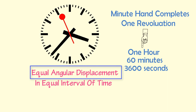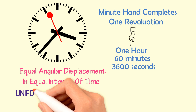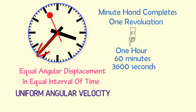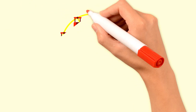In physics, when a body covers equal angular displacement in equal intervals of time, we say the body is rotating with uniform angular velocity. In practical life, the minute hand and the seconds hand of a clock rotate with constant or uniform angular velocity. Thus, the minute hand of a clock possesses uniform angular velocity.